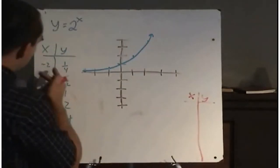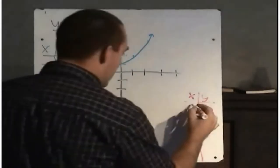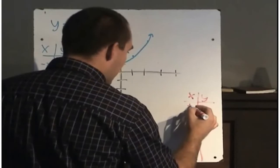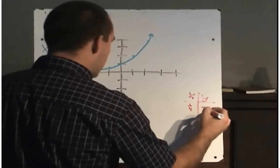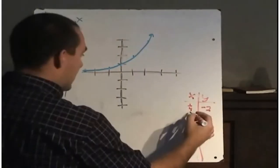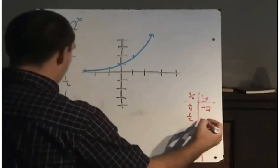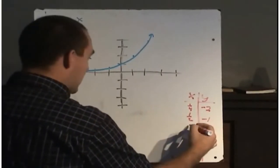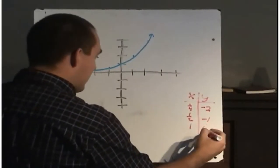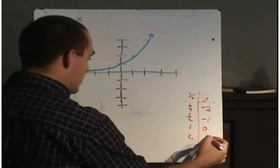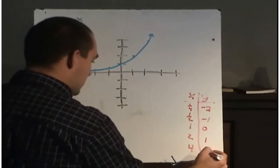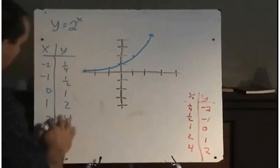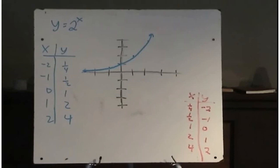If we swap the x and y values around, now when x is a quarter, y would be negative 2; when x is a half, y would be negative 1; when x is 1, y would be 0; when x is 2, y would be 1; and when x is 4, y would be 2. So I've just swapped all the points around, and now I'm going to plot them again.